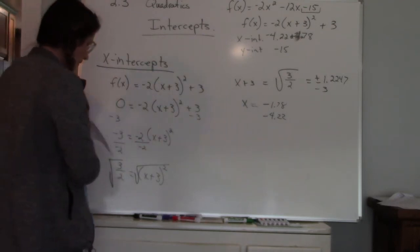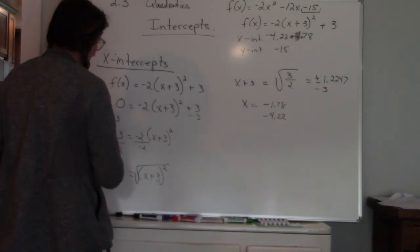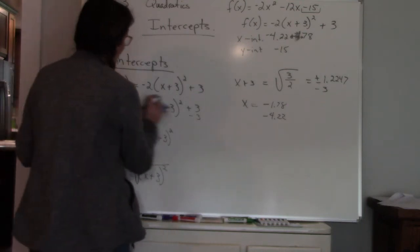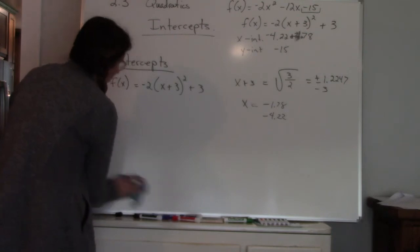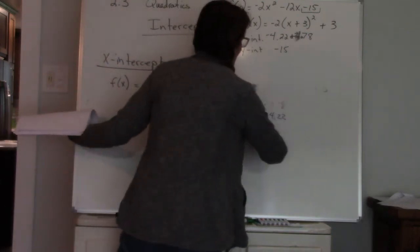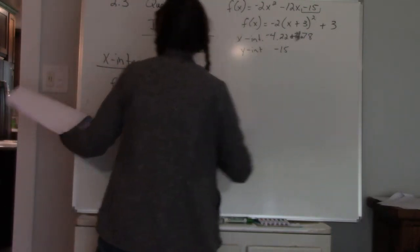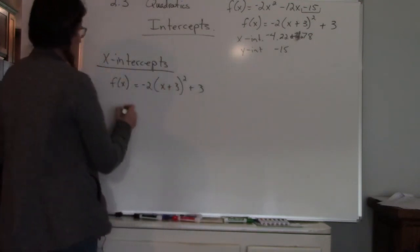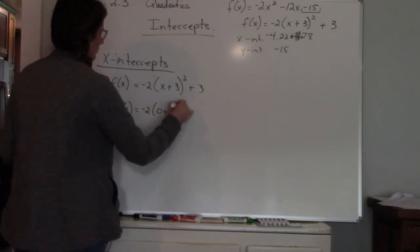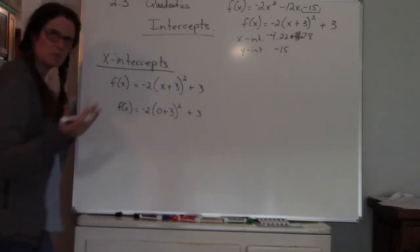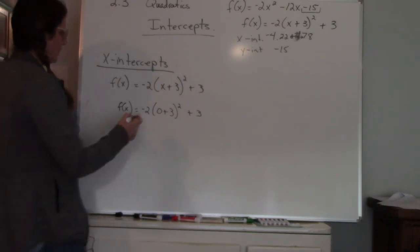To find your y-intercept, your y-intercept is a little bit more complicated when it is in vertex format because you are finding what y is when x is 0. So you're looking for your y value when x is 0. It's really not that much more complicated. It's just a few more steps that you have to do.